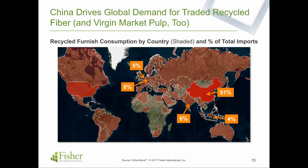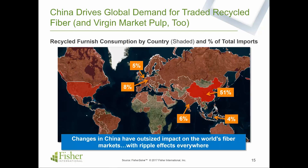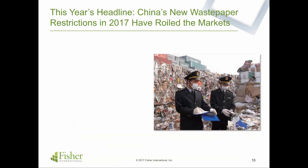Because China is so big in the global recycled fiber trade, continuing this theme of leverage on the global economy and the global pulp and paper dynamic, actions and changes in its market can have wide-ranging effects. Ripped straight from the headlines this year is the recent recycled fiber regulations, which have really turned the markets upside down. I'll turn it over to Xiaomin now to describe some background for that regulation.